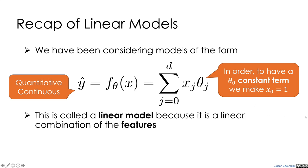This is a linear model because it is a linear combination of features. Our features are the xj's. These are the entries in our row that correspond to descriptions of the thing we're trying to make a prediction about.